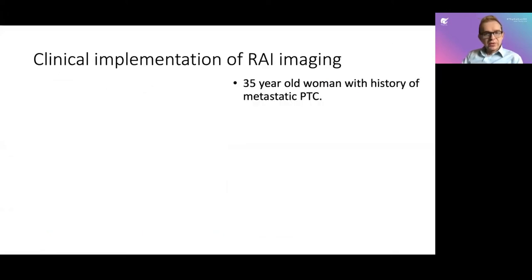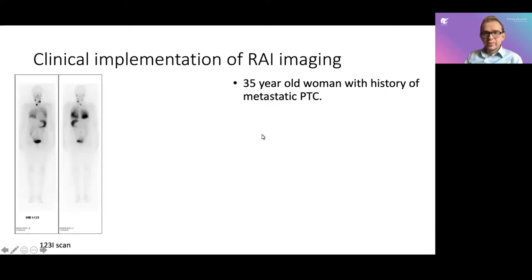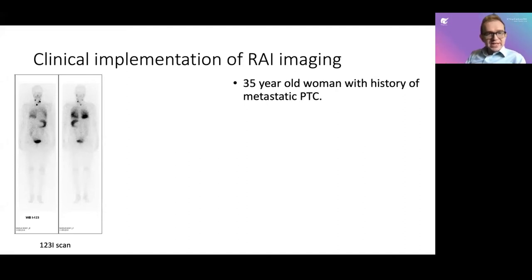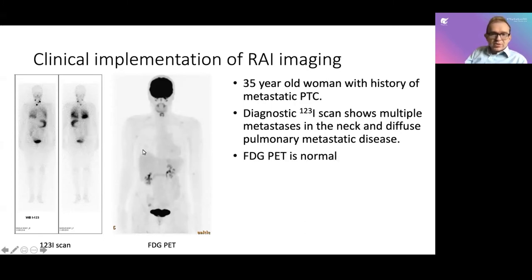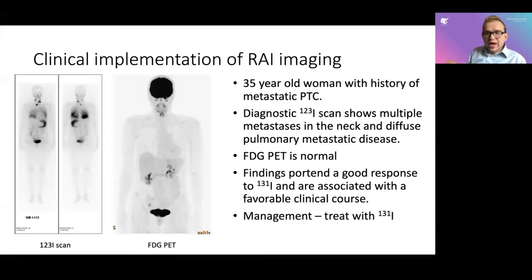Here's a classic case example: a 35-year-old woman with metastatic papillary thyroid cancer. She underwent an iodine-123 whole body scan showing sites of uptake in the neck — likely thyroid bed uptake and lateral lymph node metastases — plus diffuse uptake in the lungs consistent with lung metastases. On the FDG PET scan, it looks clean — no uptake in the thyroid bed or lungs. This is a good kind of cancer to have: a lot of radioactive iodine uptake and not much glucose uptake. This patient is the ideal candidate for radioactive iodine therapy, because we know from the scan that their cancer is really hungry for the iodine.